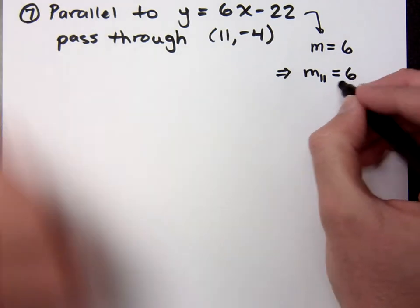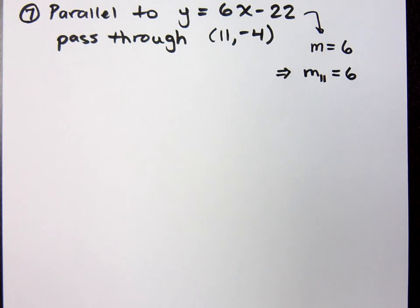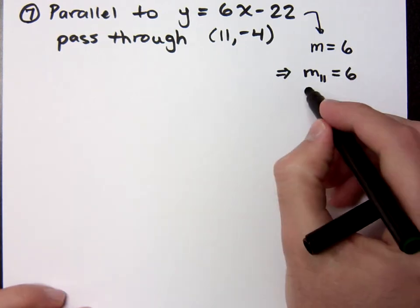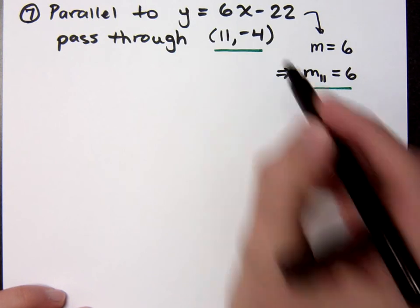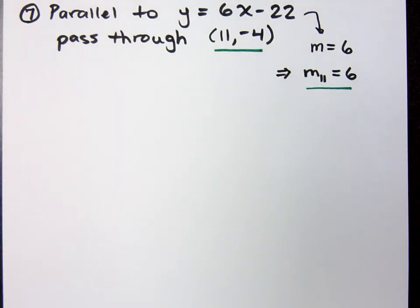It's also going to be 6. So, I'm going to use this guy. I'm going to use the slope of 6. I'm going to use this point that I go through, and that should be enough for me to get my equation. Do you all agree?